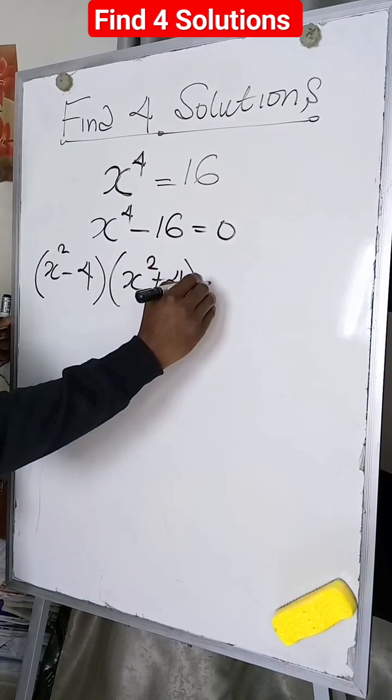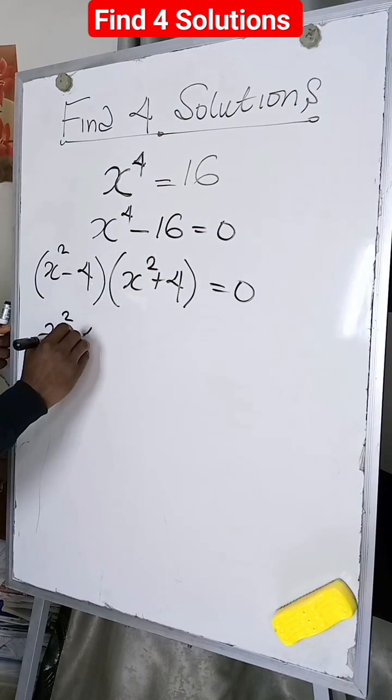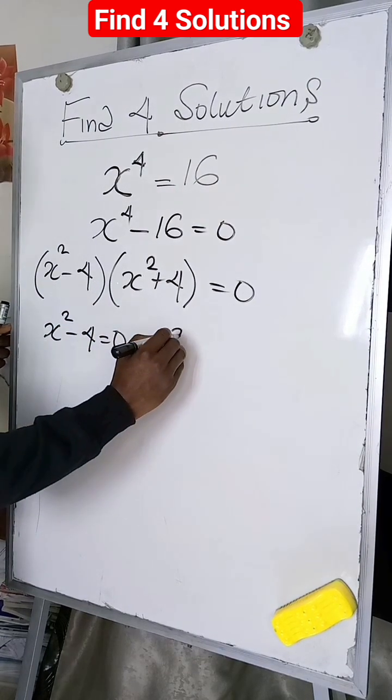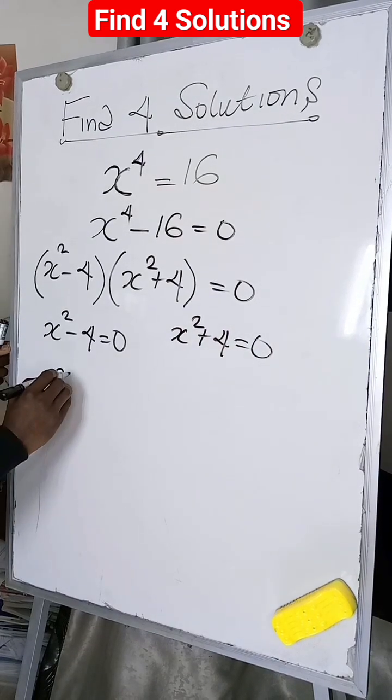So we'll have x squared minus 4 equal to zero, and x squared plus 4 equal to zero.